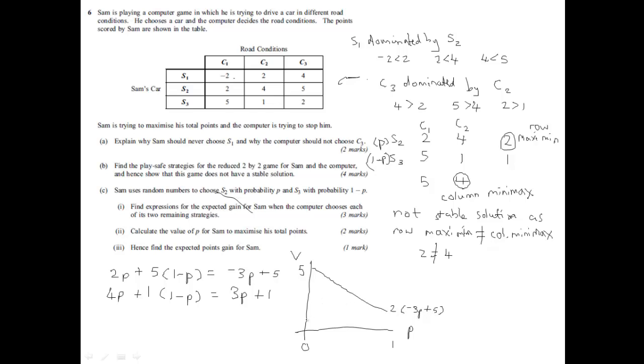And then for the other line, it starts at 1. And it goes up 3. So, that value there will be 4. And that value there will be 1. And that's the line. 3P plus 1.